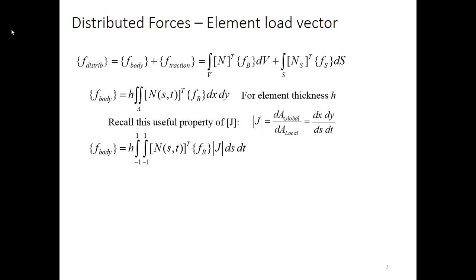Taking advantage of that property, we can write the body force vector for this element as a double integral going from negative 1 to 1 in both cases, because this is our simple 2 by 2 element in the natural coordinate system. Our shape functions are there, our body force vector, our Jacobian determinant, and then ds dt. That's a nice integral that we can actually solve. The only potential complication is if your body force term depended on x and y, and then you'd have to use your mapping for x and y over to s and t in order to evaluate this integral.